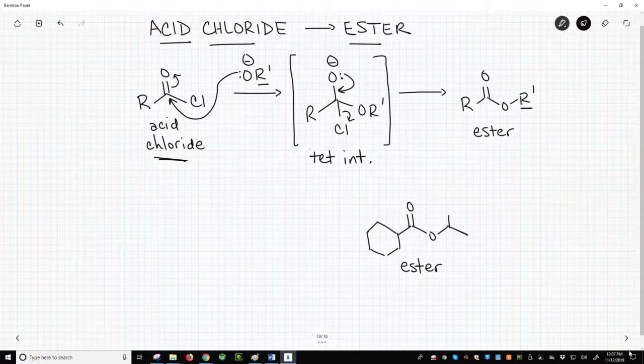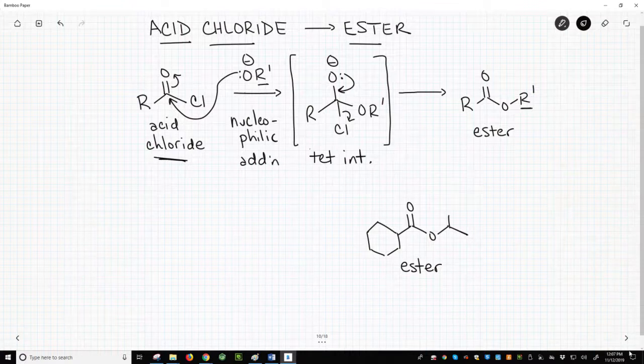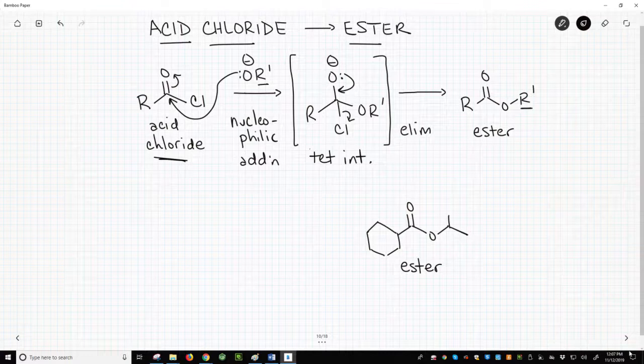The first step broke a CO-pi bond. It is a nucleophilic addition. The second step makes a CO-pi bond. It is some kind of elimination. The net effect of an addition elimination is a substitution.